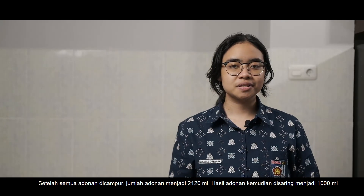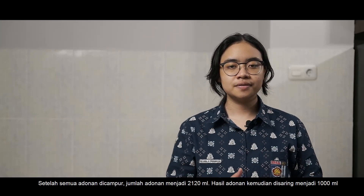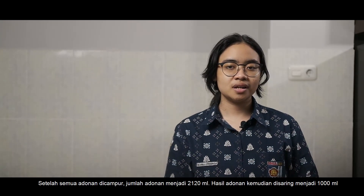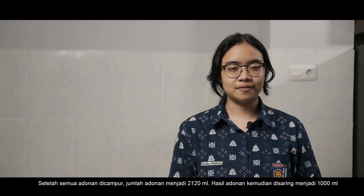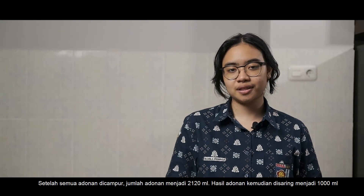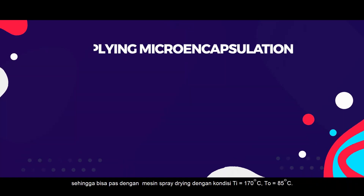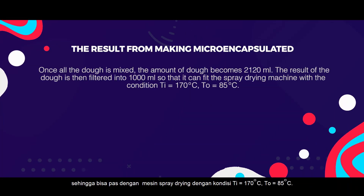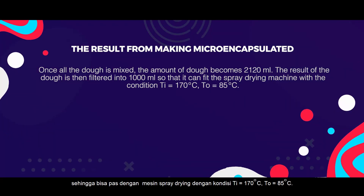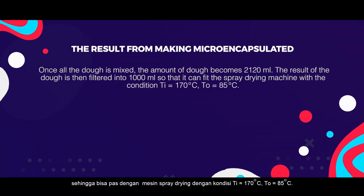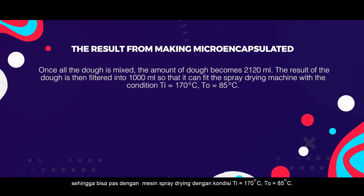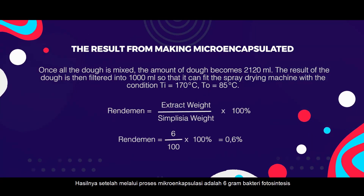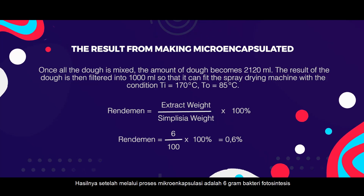Once all components are mixed, the total volume of the mixture becomes 2,120 milliliters. The mixture is then filtered to 1,000 milliliters to fit the spray drying machine, with conditions of inlet temperature Ti equal to 170 degrees Celsius and outlet temperature To equal to 85 degrees Celsius.